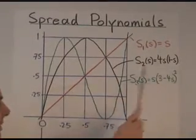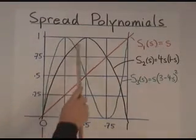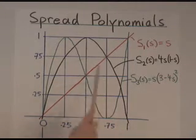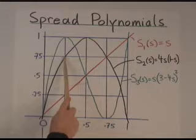S2 in black is the second spread polynomial, 4s times 1 minus s. It's actually a parabola, it's a second degree curve, which goes through these two points and that point. And it also goes through here and here.